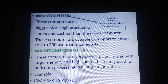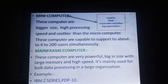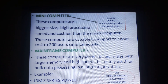Next one is the mainframe computer. These computers are very powerful, big in size, with large memory and high speed. They are mainly used for bulk data processing — that is, huge data processing in large organizations. Examples of mainframe computers include IBM Z series and PDA 10. Mainframe computers are used in banks, universities, railway ticket reservation, etc.